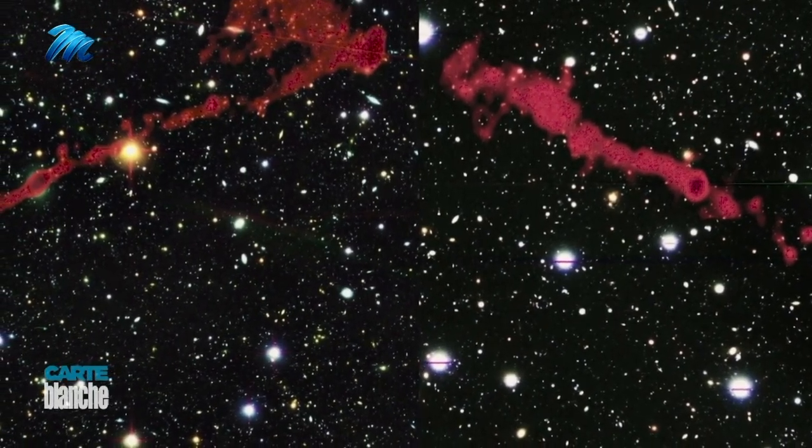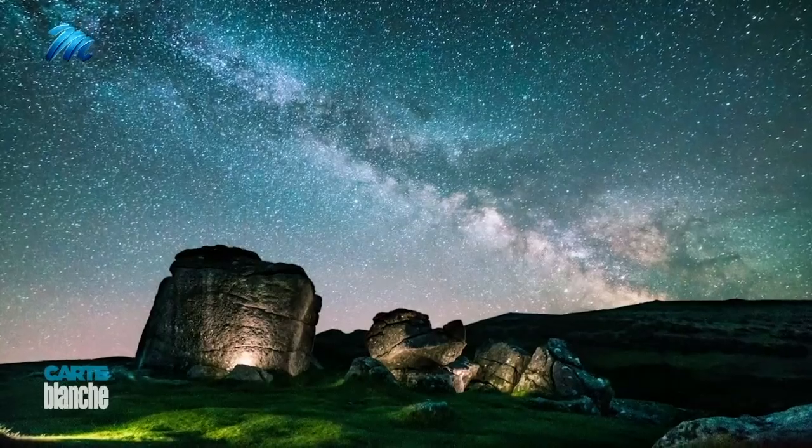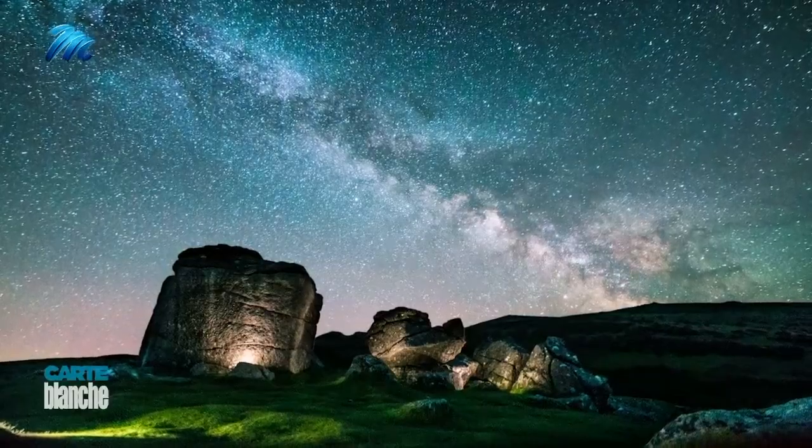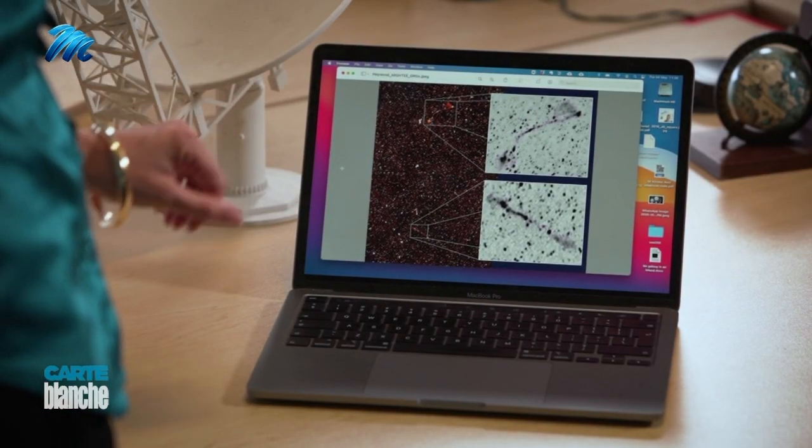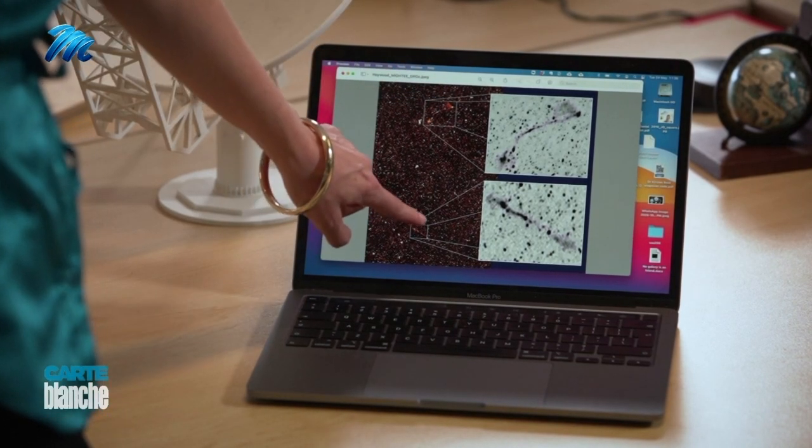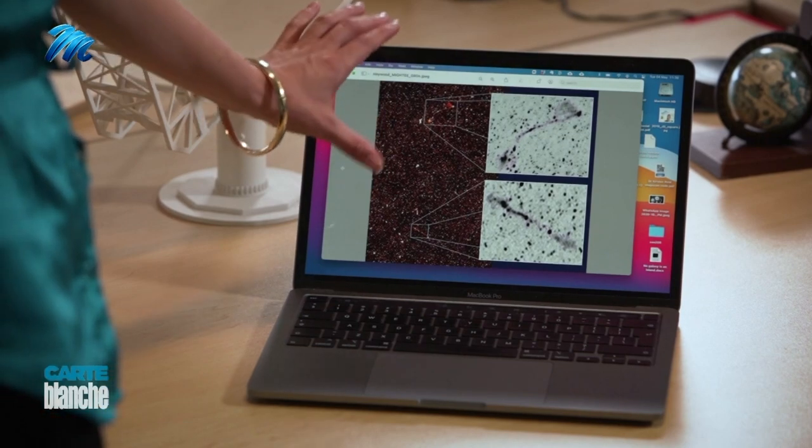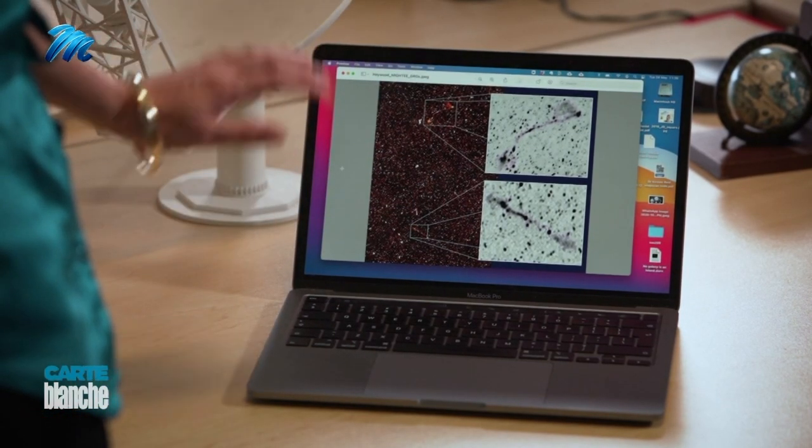These galaxies are enormous, 23 times the size of the Milky Way, which itself is a hundred thousand light years in diameter. This is part of our map from the MIGHTEE survey and you can see one of the giant radio galaxies here and another one here. As soon as we looked at the map you could see these big streaks through the sky which we knew were not there before.